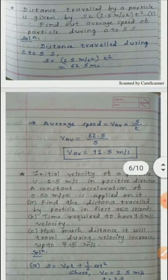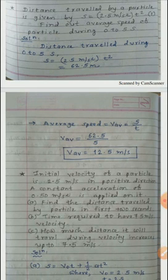Next example: distance travelled by a particle is given by s equal to 2.5 m/s² into t square. Find out the average speed of the particle during 0 to 5 seconds.